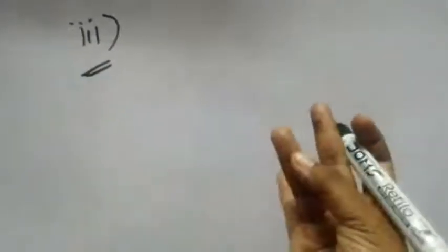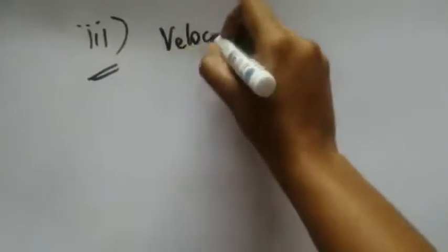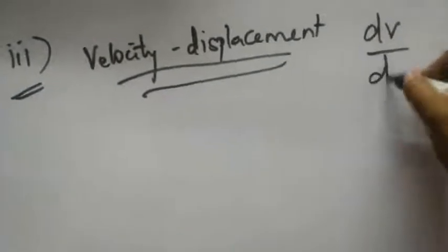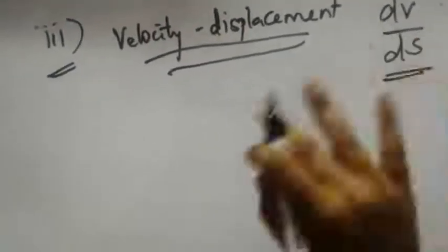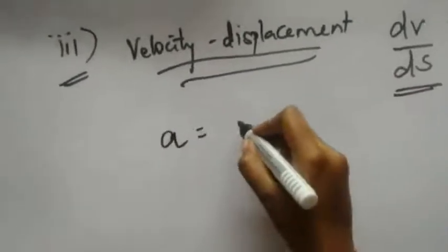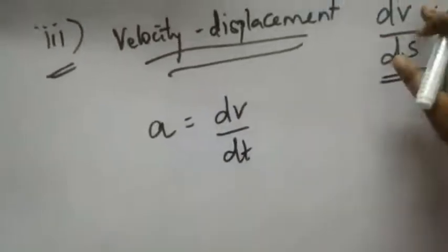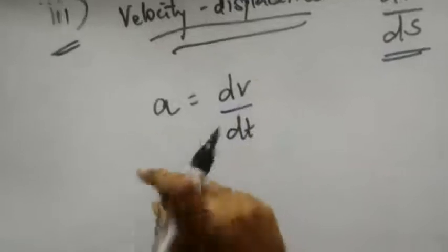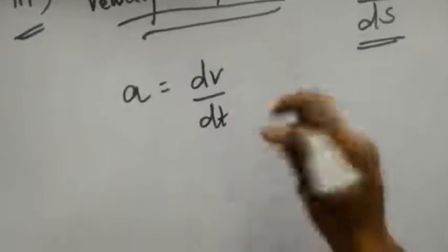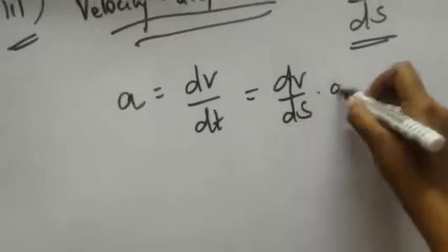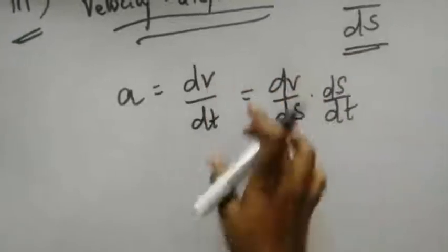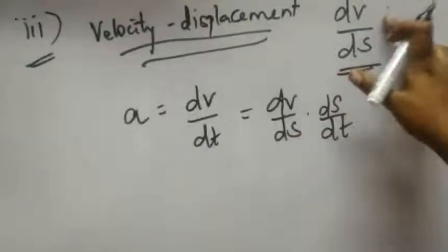Now we go for the third derivation. Velocity-time and displacement-time relationships are done; now we go for the velocity-displacement relationship. This is dv/ds — change in velocity by change in displacement — which is not directly available. So we use the acceleration equation: a equals dv/dt. We can rewrite this as a equals dv/ds times ds/dt, because the ds terms cancel, giving back dv/dt.